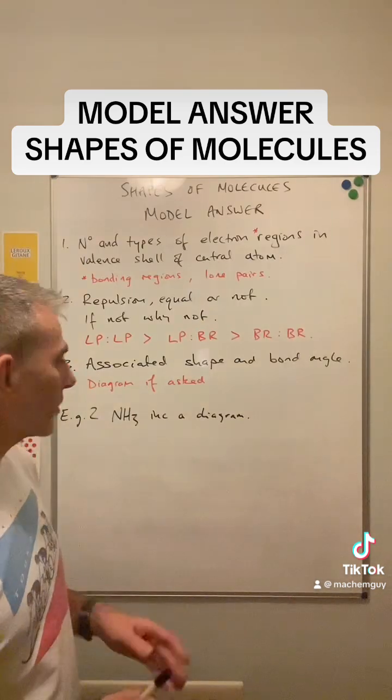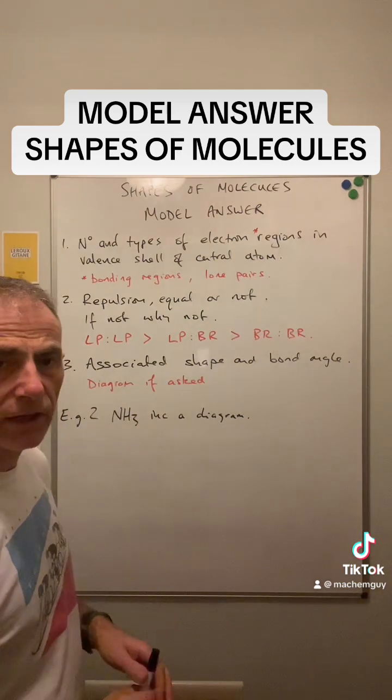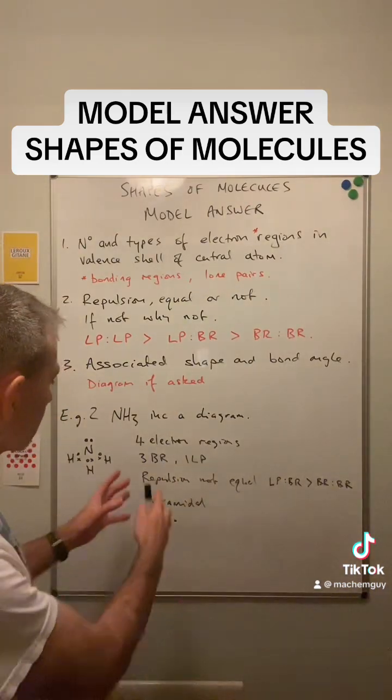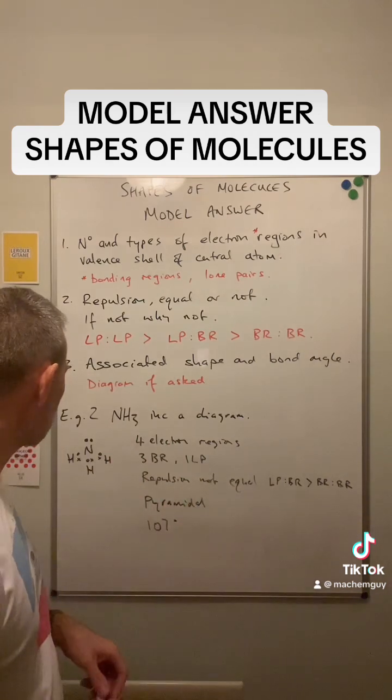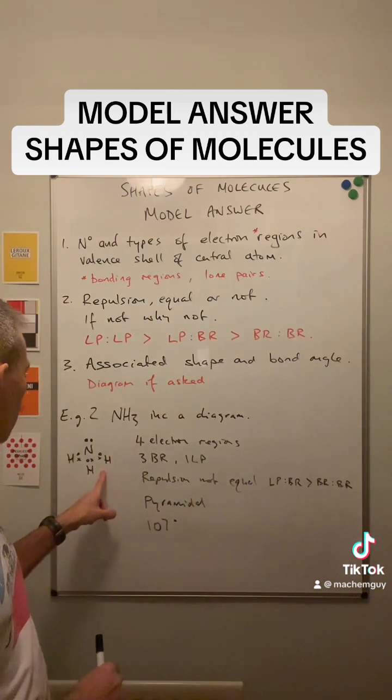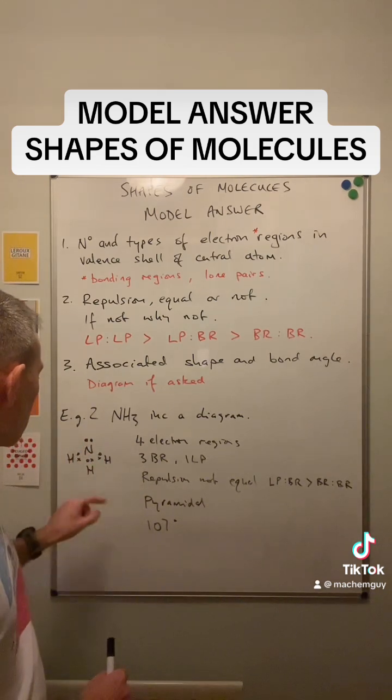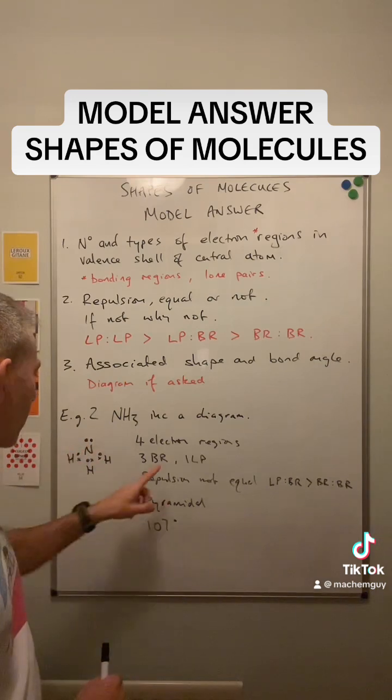We'll do one more. So the NH3 molecule and we're going to include a diagram. So I've populated all my statements for the answer. I'll run through that and then quickly draw the diagram. So there's my dot and cross diagram. You can see there's four regions around the nitrogen, four electron regions, three bonding regions, one lone pair.